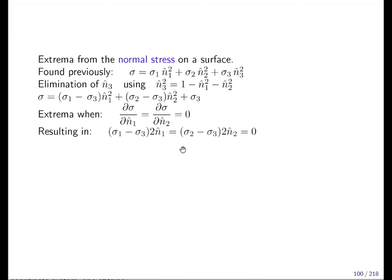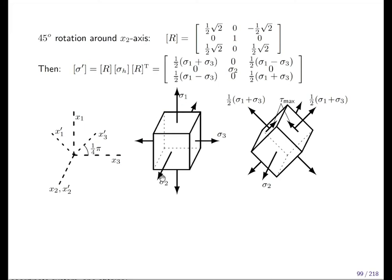Now extrema from the normal stress on a surface—which are the extrema now? Are the extrema the sigma one, sigma two, sigma three, or are the extreme normal stresses the sigma one plus sigma three half and the sigma one plus sigma three half on the second diagonal, or the sigma two? We never know.